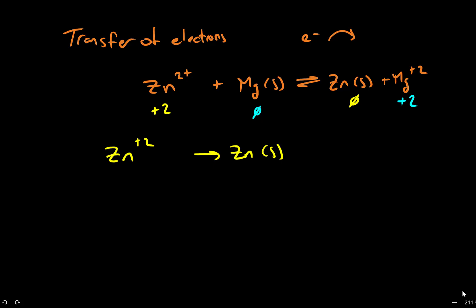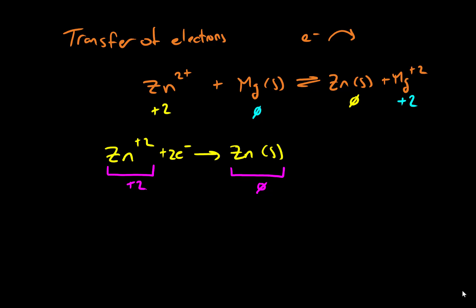To balance this half reaction, we need to make sure two things are true. Number one, the total number of atoms must be balanced — we only have one zinc on each side, so that is balanced. Second, we need to make sure charge is balanced. On the reactant side we have a charge of plus two, and on the product side we have a charge of zero, which means we need to add two electrons to the reactant side so the overall charge on both sides is zero.